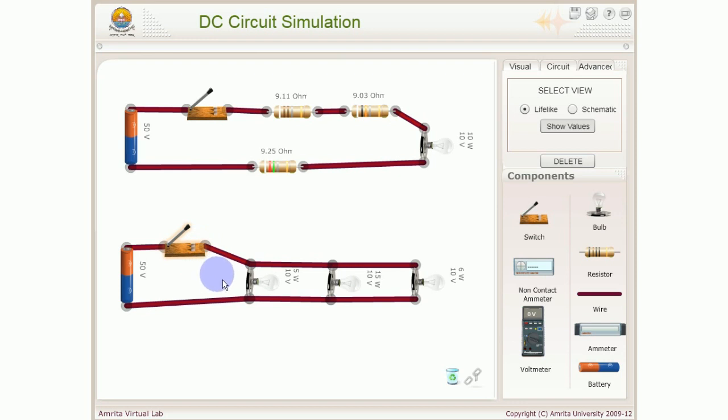See there are some differences between series and parallel circuits. Series circuit doostos wo hota hai jis me current sirf ek hi path se pass hooga. As you can see, in this circuit there is only one path for current to pass. In series circuit, there is only a single path.